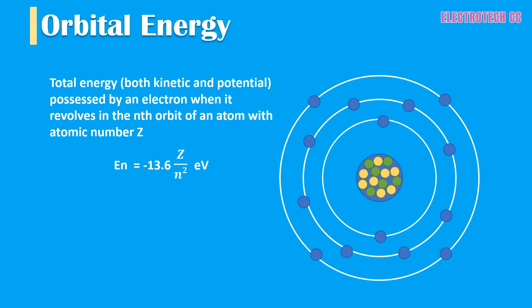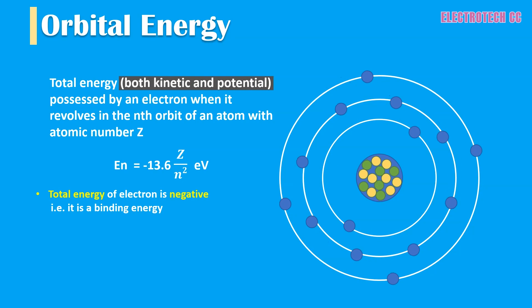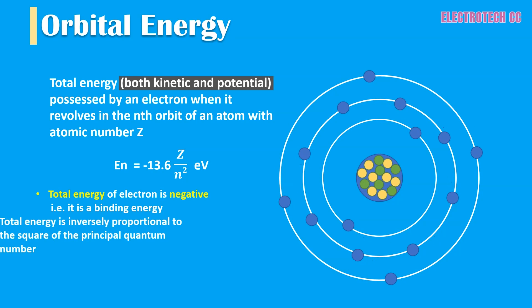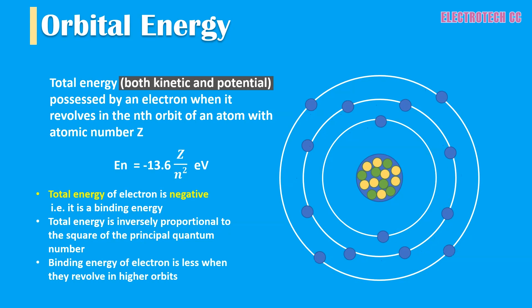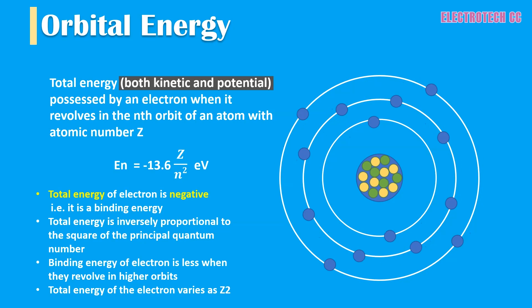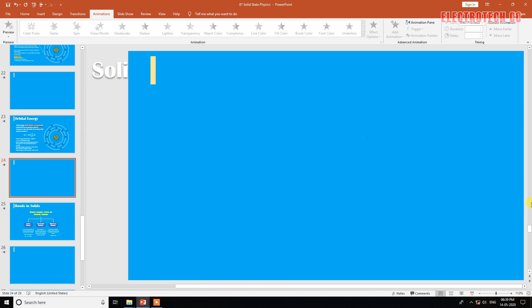Total energy is inversely proportional to the square of the principal quantum number n, and binding energy of electrons is less when they revolve in higher orbits. Total energy of the electron varies as Z². So this is the introduction video on solid state physics.